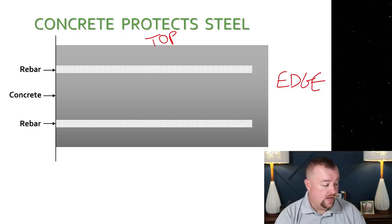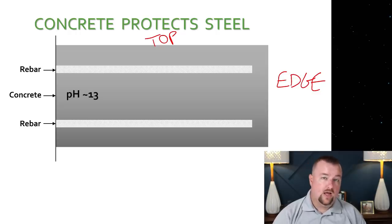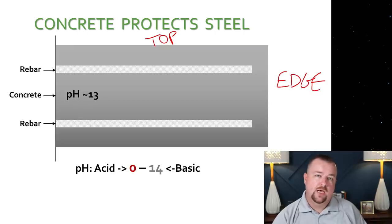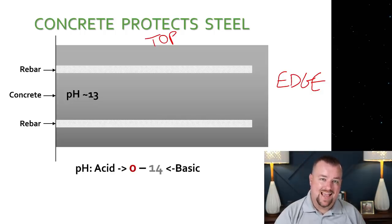So in this case, we have two pieces of rebar, one in the top and one in the bottom, and the rest of the gray area is our concrete. Now concrete, when it's first cast and poured around the steel, has a pH of around 13. Now pH is simply a measurement of how acidic an environment is with zero being the most acidic and then 14 being the most basic or alkaline in the environment. So you can see that when concrete is first cast around the steel, it has a very alkaline environment. It has a very high pH around 13.